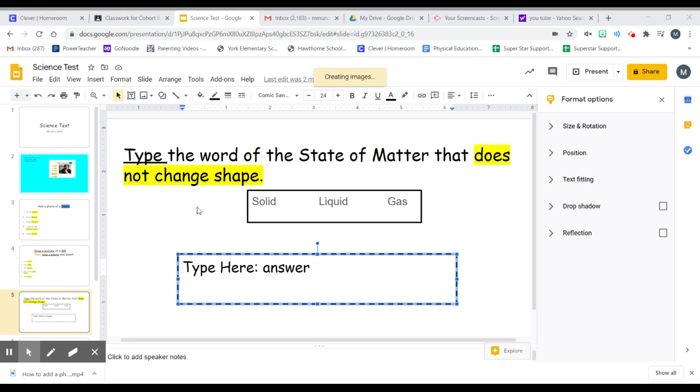Hey kiddos, today we are going to practice typing our answer in a Google Slide. First, I'm going to read my question. Type—it's underlined—this is what I have to do: type the word of the state of matter that does not change shape.